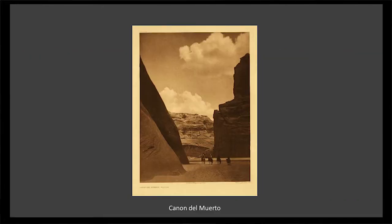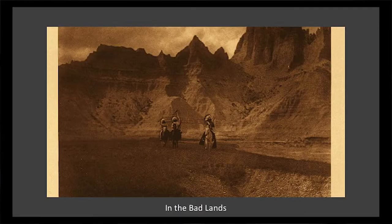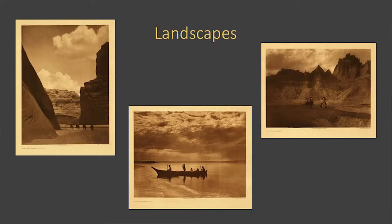Moving on to landscapes. The immense landscape — Curtis often includes the human subject, creating a contrast of man and nature. Like Canyon de Chelly, Canyon del Muerto shows the immensity of steep cliffs and the diminutive human figures. Sunset on Puget Sound shows a higher horizontal line and a more prominent image of the vessel and its occupants. And the Badlands, again with rising mountains. In summary: Canyon del Muerto, on Puget Sound, and in the Badlands.